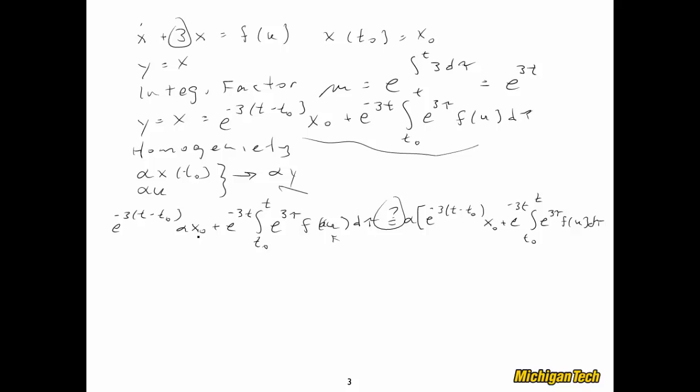So let's go ahead and check to see if these two sides are equal. Well, let's see. This expression, e to the negative 3, t minus t0, alpha x0, sure enough, that is the same as that one. However, this one may or may not equal that one. It kind of depends on what f(u) is.